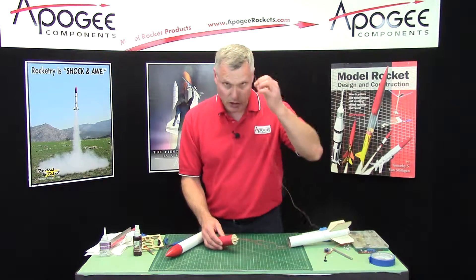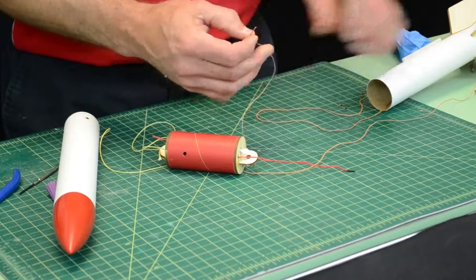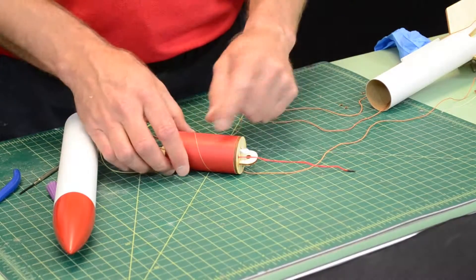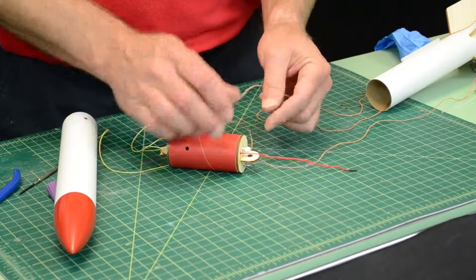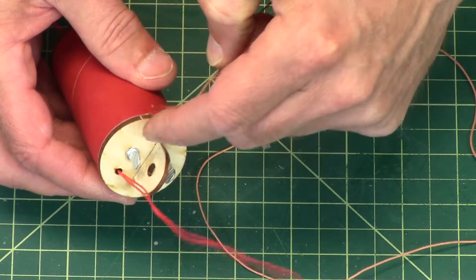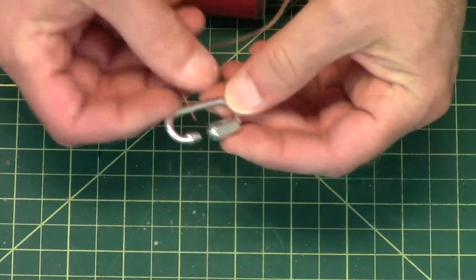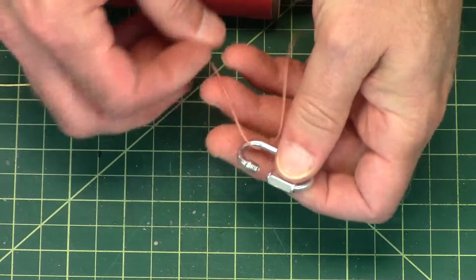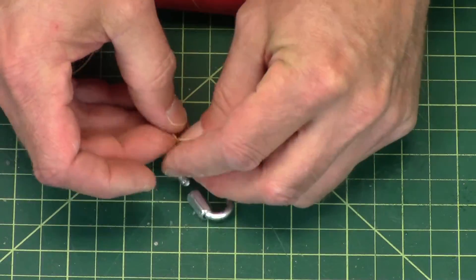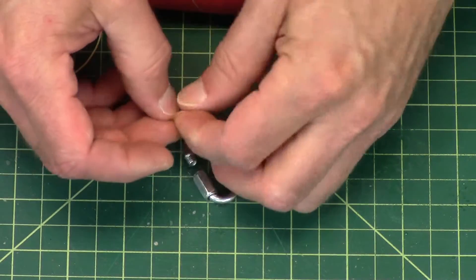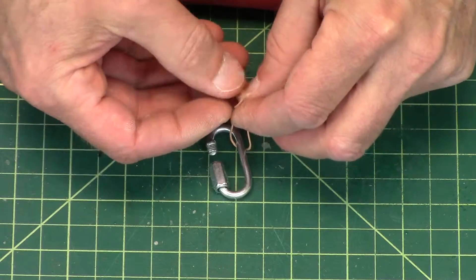Now, this shock cord is attached to this end, but to make your life easier because every time you want to open this up and get at your electronics, you're going to have to detach this shock cord because it's not going to go through that slot right there. So get a quick link. They're called quick links, so I'm going to tie this to the quick link.